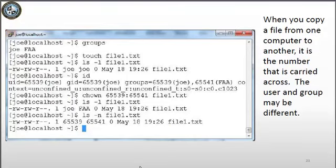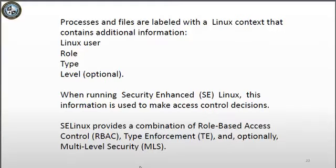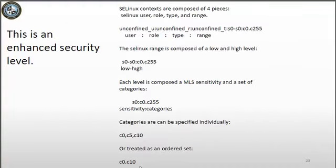At some point you'll learn about Network Information Services (NIS) and LDAP, which solve many of these problems if you have multiple servers. NIS is usually pronounced 'NIS.' Red Hat Linux also has an enhanced security system with a Linux context that contains additional information such as the Linux user, role, type, and level. You can look in the man pages for more information.